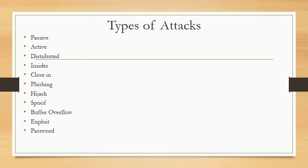Different types of attacks briefly: the passive attack basically monitors unencrypted traffic and looks for clear text passwords and sensitive information that can be used in other attacks. The active attack involves the attacker trying to bypass or break into a secured system — this can be done through stealth, viruses, worms, or Trojan attacks. The distributed attack requires the adversary to introduce code such as a Trojan horse or backdoor program to get into organizations and companies.